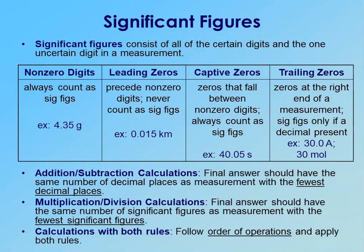In that first example with the non-zero digits, 4.35 grams would have three sig figs, while 0.015 would only start with sig figs at the one — it would have two sig figs, because you could write that in scientific notation form as 1.5 times 10 to the negative second and still show the significance of the one and the five, as well as the size of the number with the exponent.